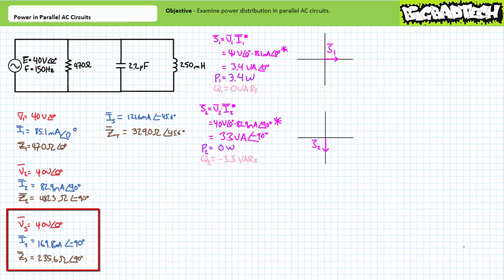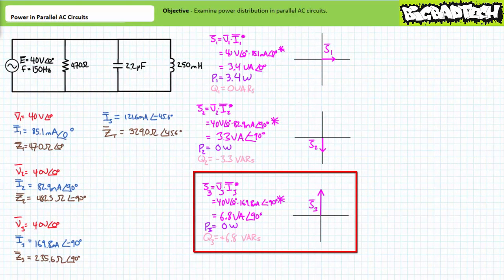Let's now examine the inductive impedance Z3. Current through the inductor lags the voltage across it by a relative 90 degrees. For this purely inductive element, we should expect all of apparent power to be directed towards a reactive interchange. Apparent power is the complex conjugate of voltage times current. Substituting in our given values, we arrive at an apparent power figure of 6.8 volt amperes at an angle of 90 degrees. Resolving this demonstrates the inductor is directing zero watts towards real power and 6.8 vars towards a reactive interchange. Note the complex conjugate operation accounts for the positive reactive power sign — you'll sometimes hear people referring to an inductor as absorbing reactive power.